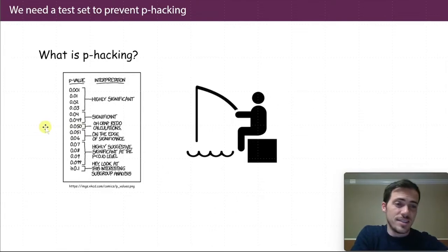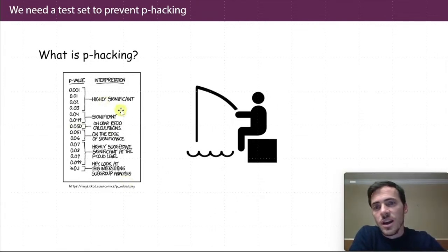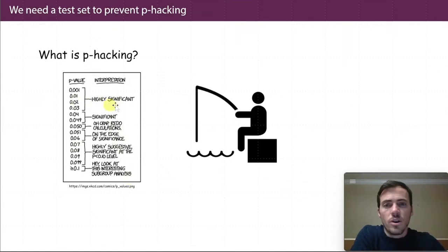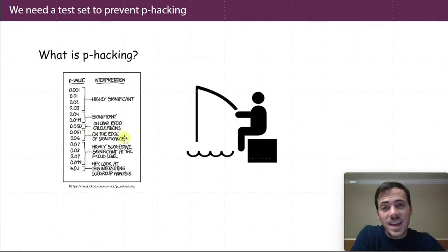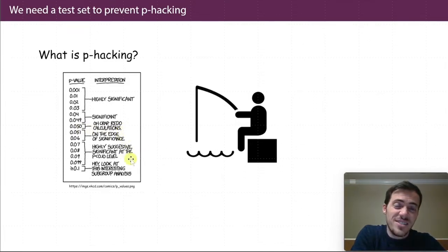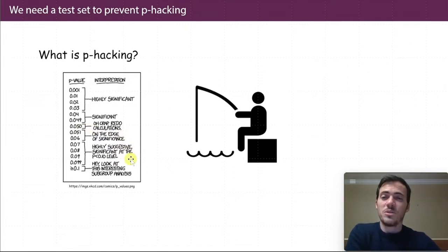Here's a funny cartoon from XKCD where, if you're up in this higher region at 0.01, you're highly significant. Over here you're significant. If you're right at the border of 0.05, you're probably not. Maybe you're at the edge. It's starting to look more like it's just significant only if you look at it under certain subgroups, or in different ways it's not working.